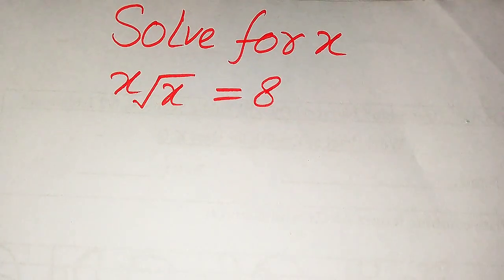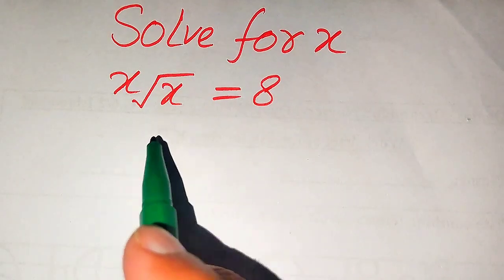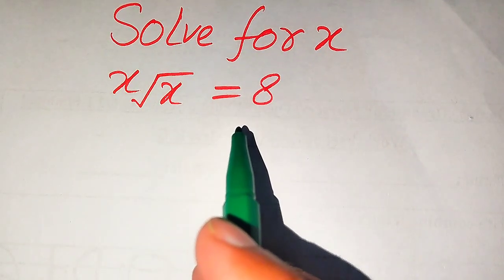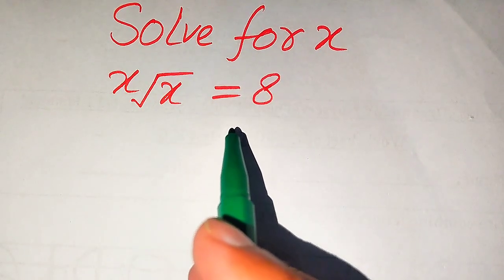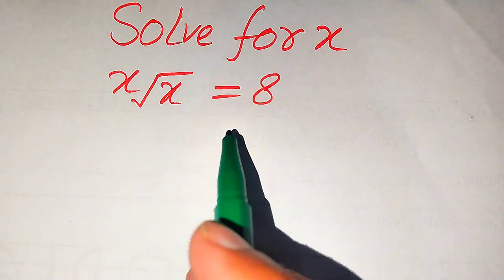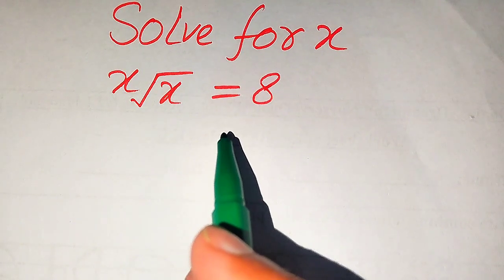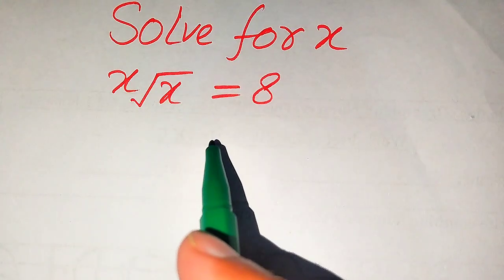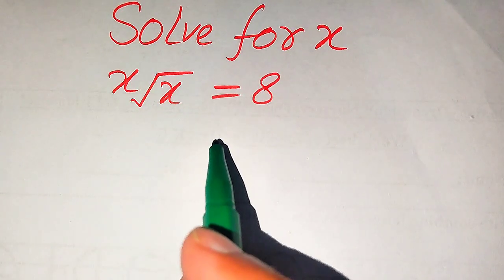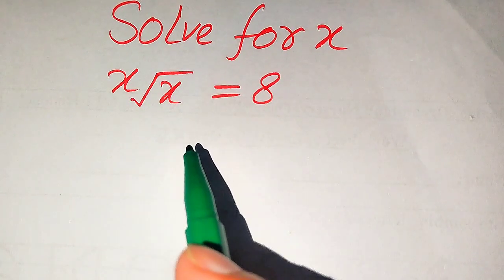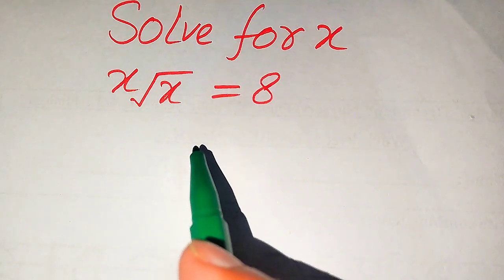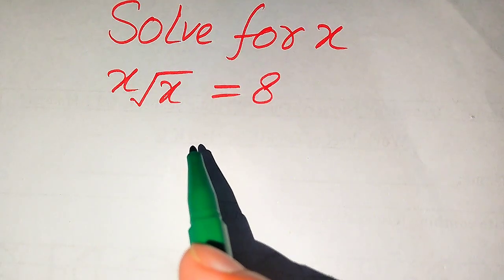Hello everyone. How to solve this problem for the values of x, if we have x times square root of x is equal to 8. We solve this problem for the values of x, finding all the solutions of this equation. If you have any other method in mind, please don't hesitate to write it in the comment section.